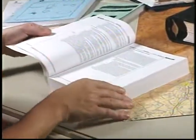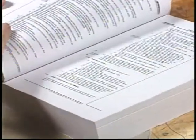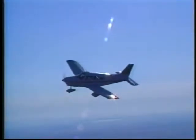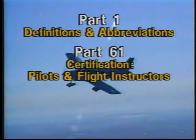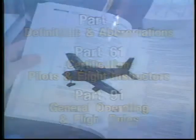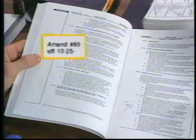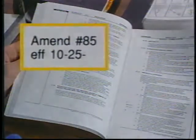Let's begin with one which contains specific information: the Federal Aviation Regulations. A few of the areas you should be familiar with are Part 1, Definitions and Abbreviations; Part 61, Certification of Pilots and Flight Instructors; and Part 91, General Operating and Flight Rules. Due to the ongoing changes in the FARs, it's important that you have access to current editions and review them periodically.